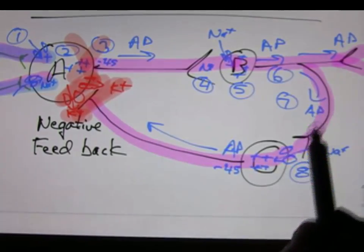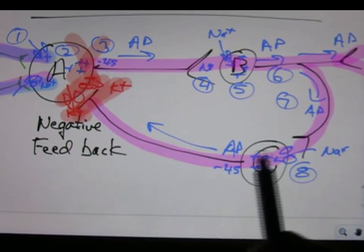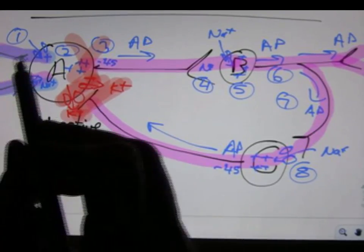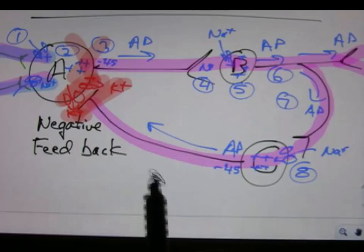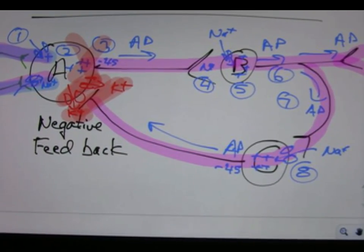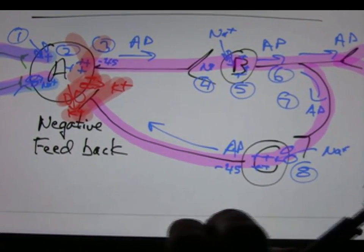After we've stopped it for a while, once these action potentials stop coming here, this stops, and we can have a new set. That's negative feedback. And both negative and positive feedback circuits occur, and we'll talk about some of them.